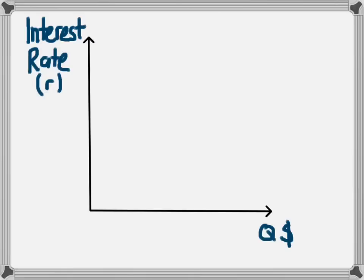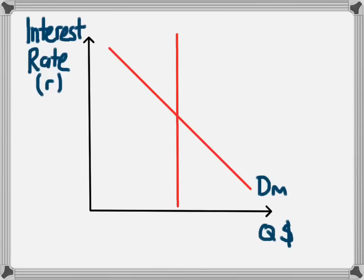The demand for money is a downward sloping demand curve, because at lower rates of interest people will demand higher amounts of money. The supply of money in an economy at any one time is fixed by the government or by a central bank, and so we have a perfectly inelastic money supply, which is a vertical line.